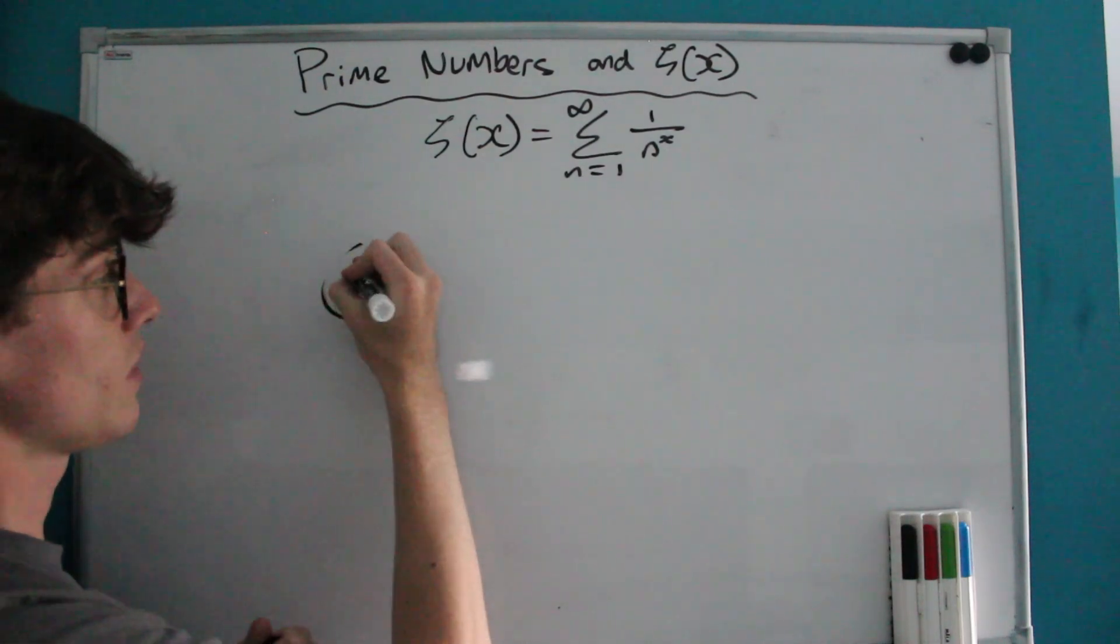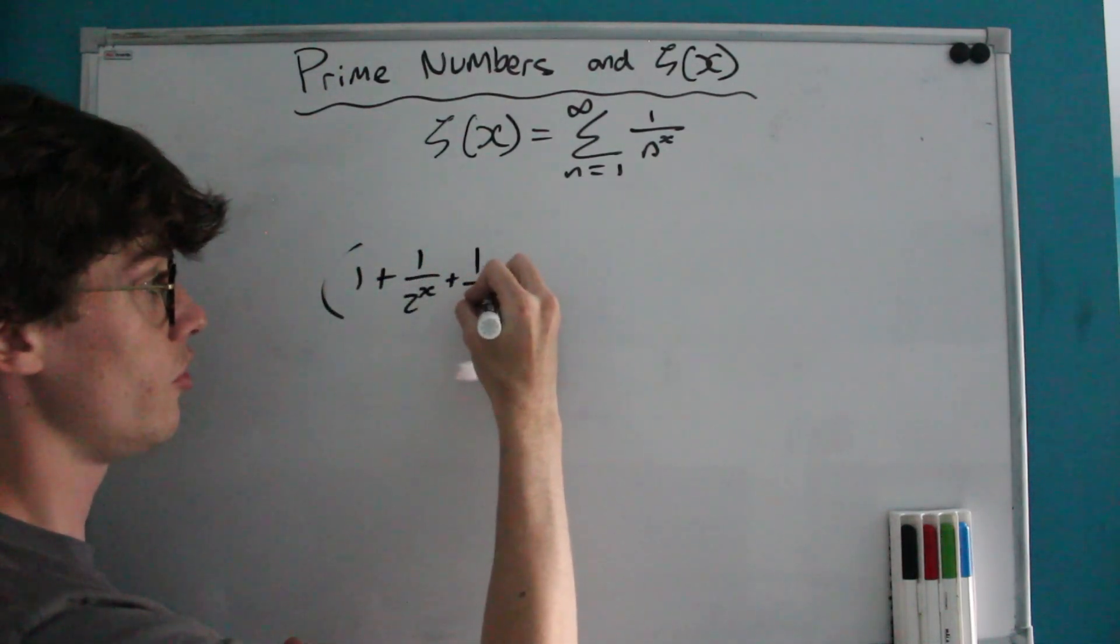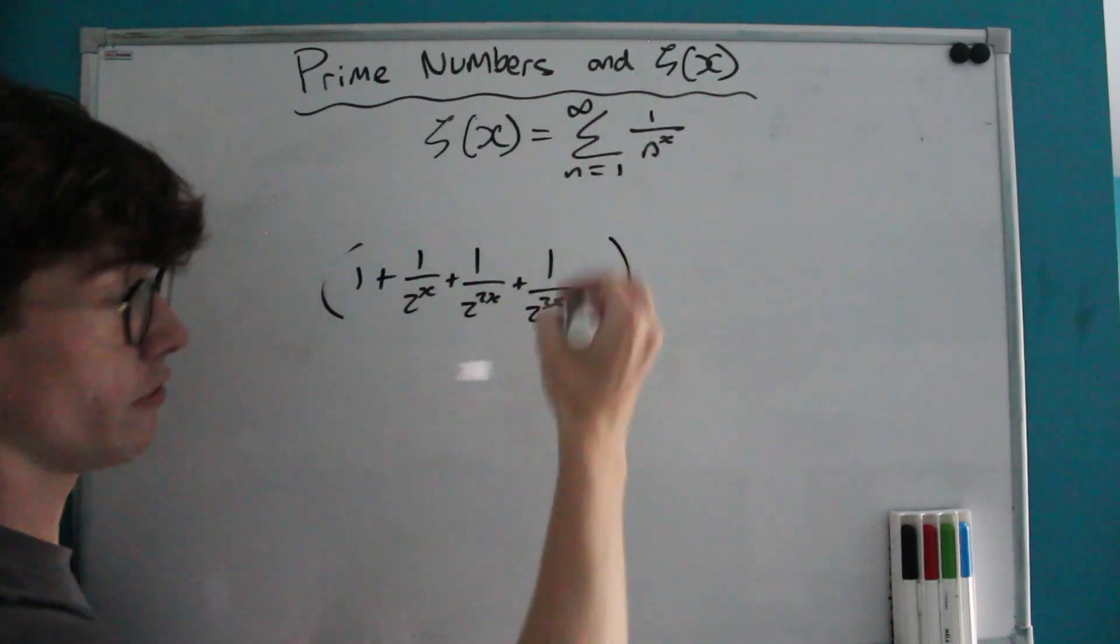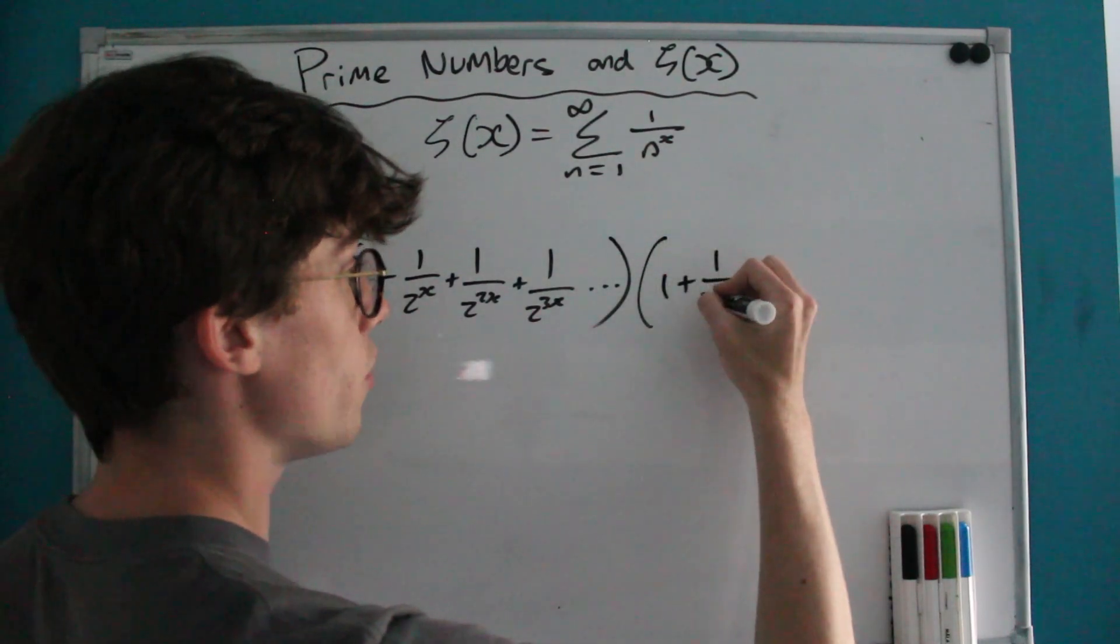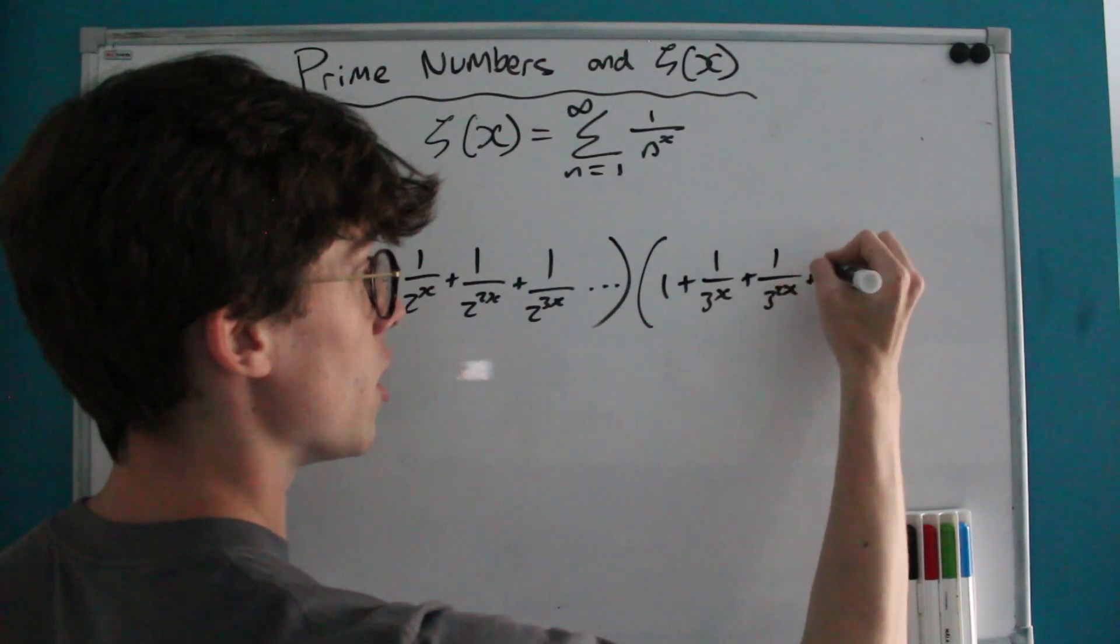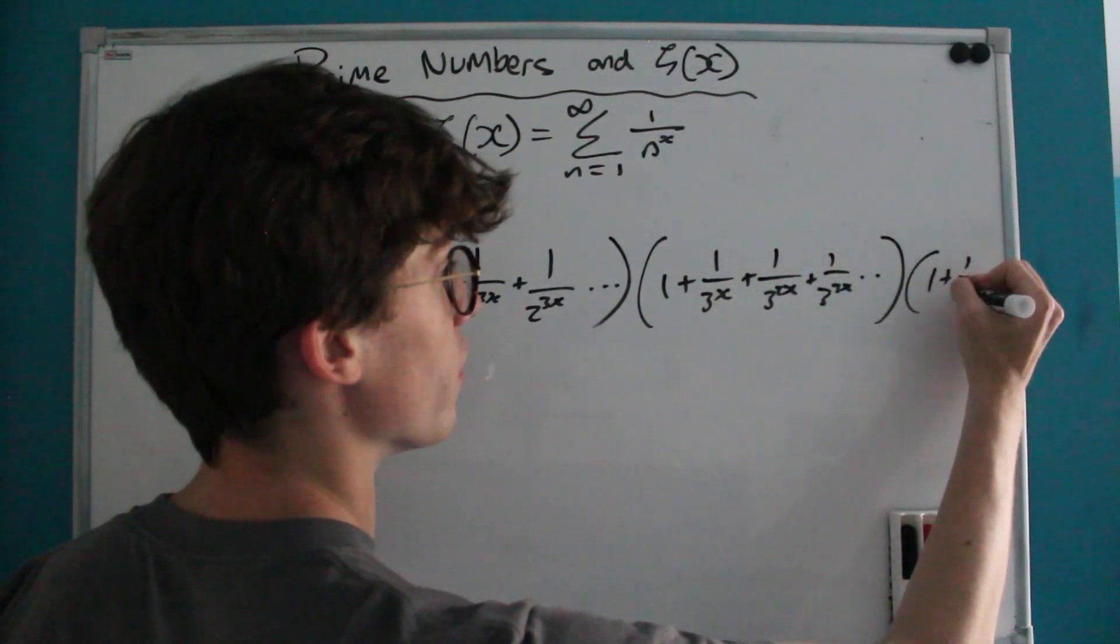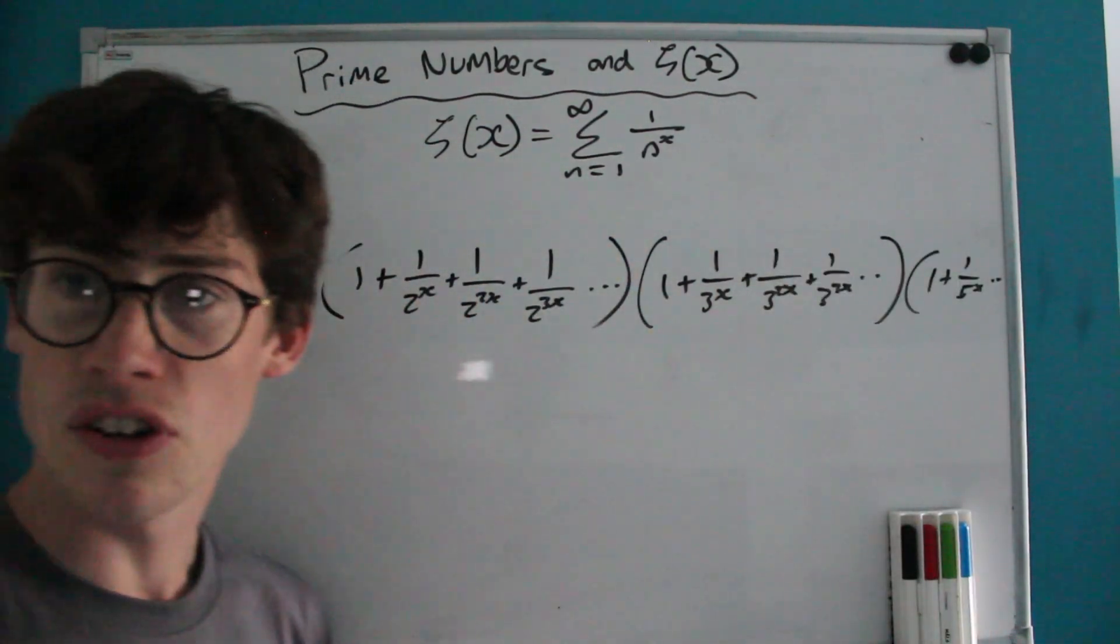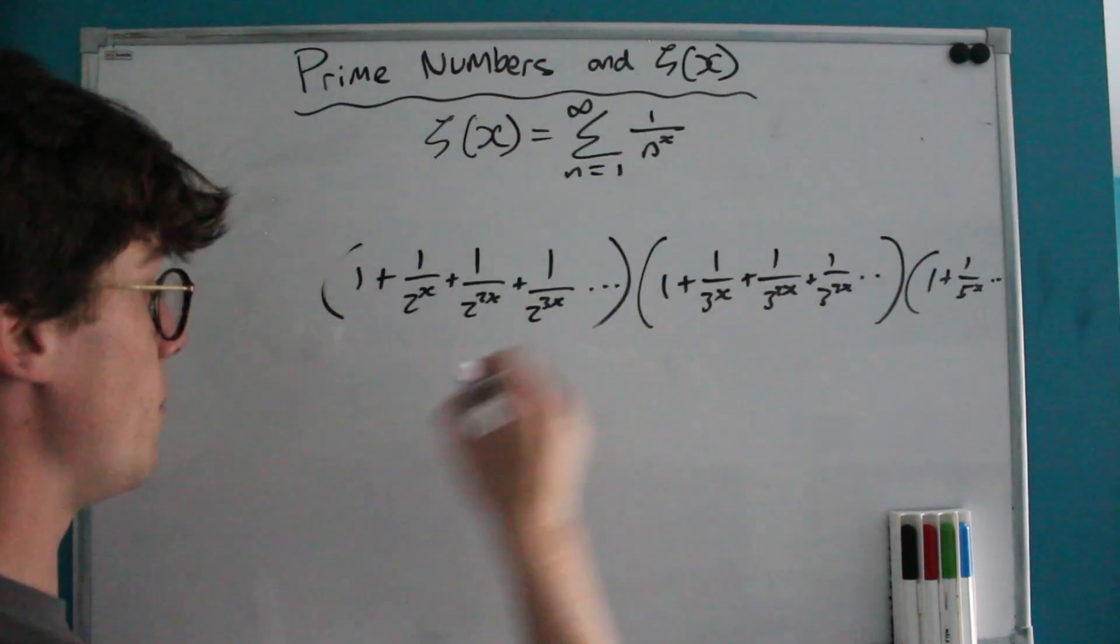So what we're talking about is having 1 plus 1 over 2 to the x plus 1 over 2 to the 2x plus 1 over 2 to 3x etc. as our first prime. Well of course 3 is our next prime so we're going to consider this one next and after that we've got 5 and I think you're starting to get the idea here we could go on and on. But let's just look at our first two brackets here.